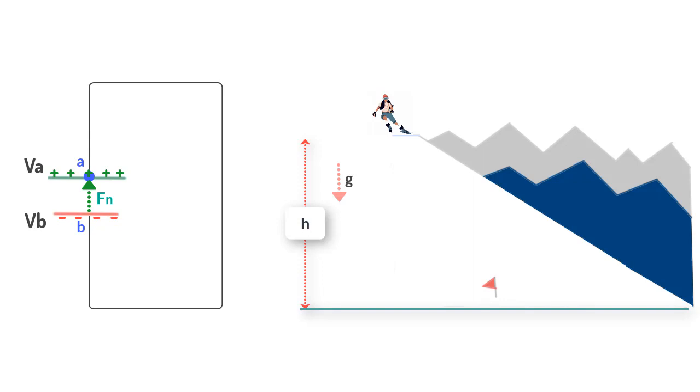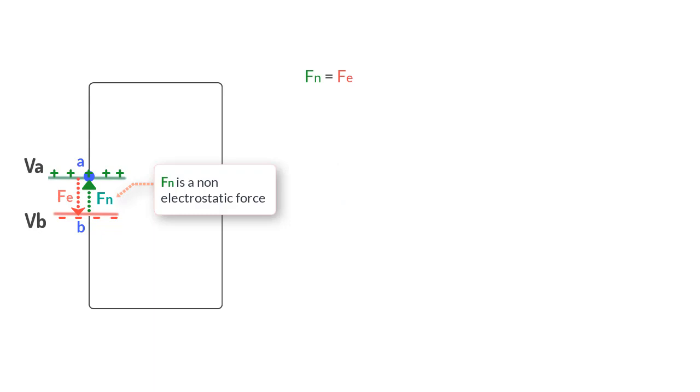So you see Fn, that is a non-electrostatic force, just about overcomes the electric force Fe and carries the charge up to the positive terminal. And so we say Fn is equal to Fe.